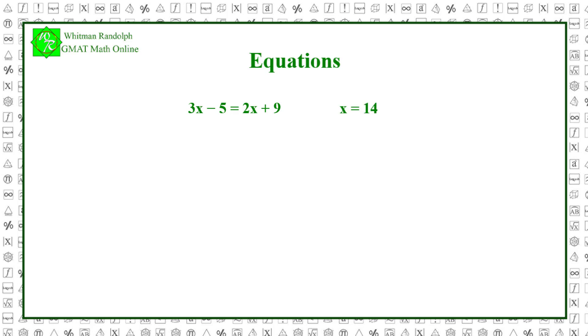That is, if x equals 14, then both sides equal 37. As you can see, 3 times 14 minus 5 equals 42 minus 5 and that equals 37. And 2 times 14 plus 9 equals 28 plus 9 and that equals 37.